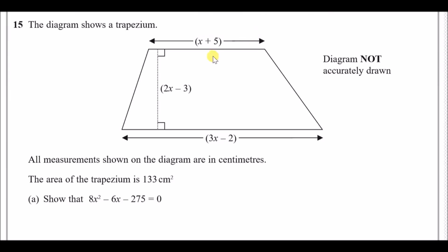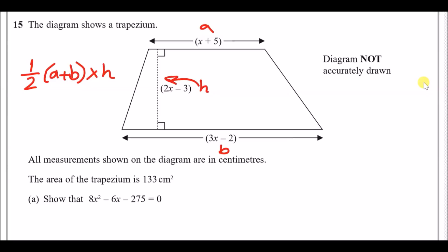Number 15: the diagram shows a trapezium. The area formula given in the front of the booklet is half times (a + b) times the vertical height, where a and b represent the two parallel sides. All measurements shown are in centimetres and the area of the trapezium is 153 cm².